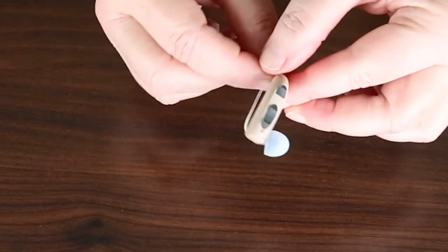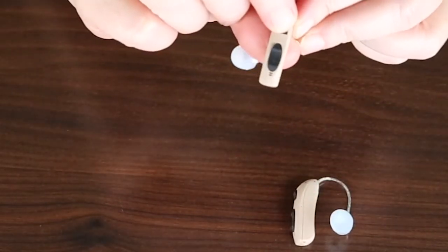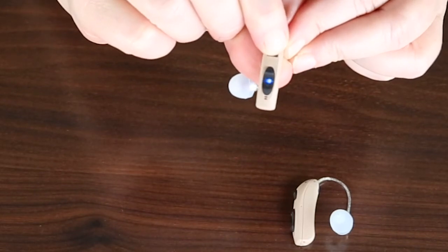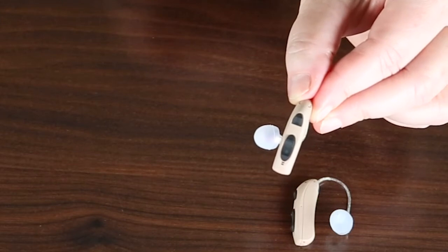When you're ready to power off the hearing aid, you'll simply do a press and hold. And at that point you will receive a blue light. Blue now means it is powered off.